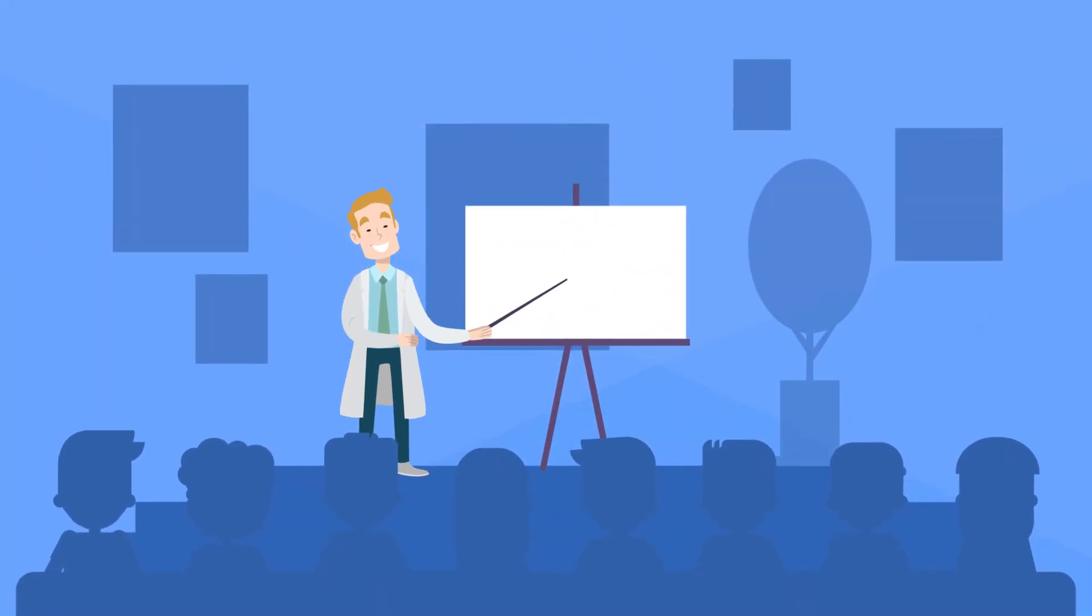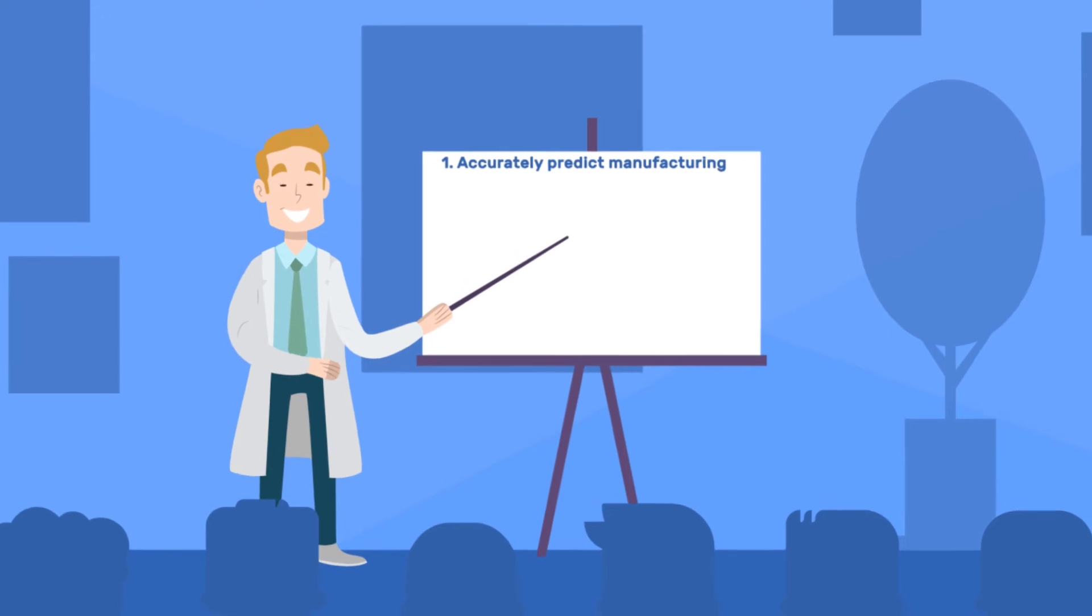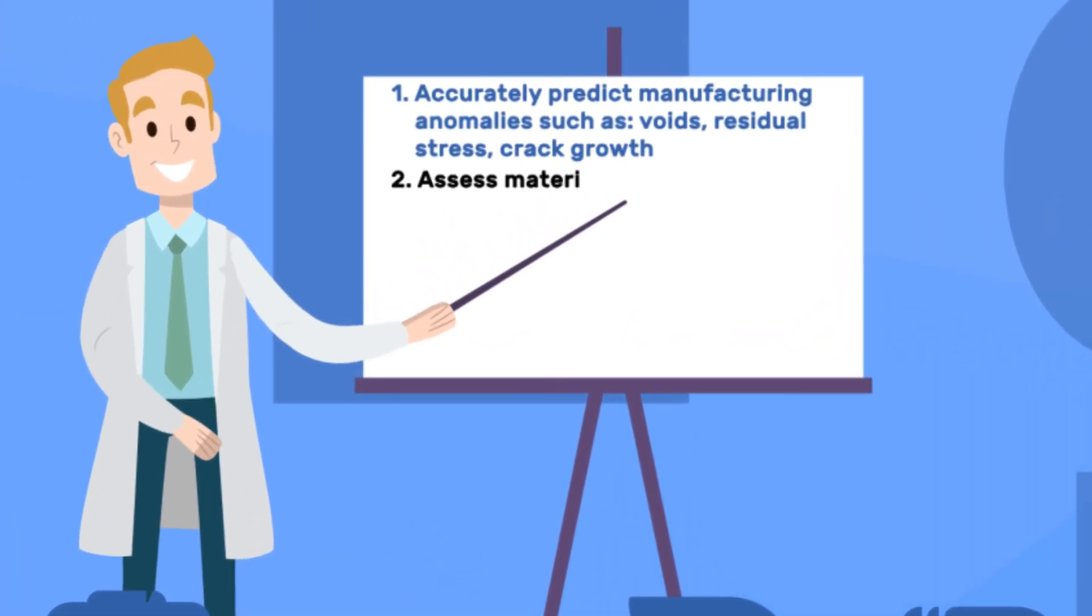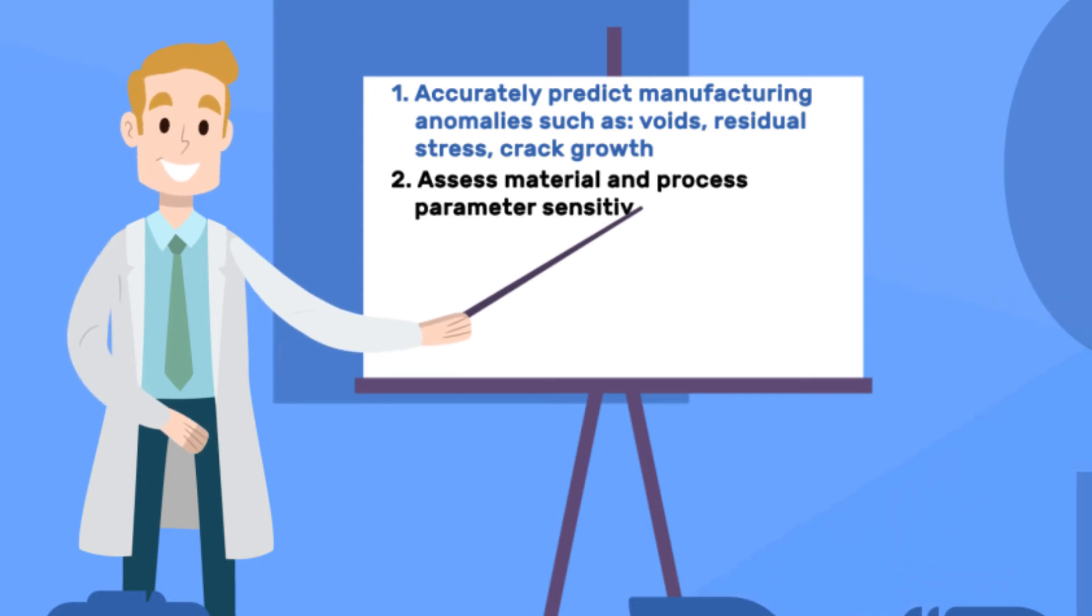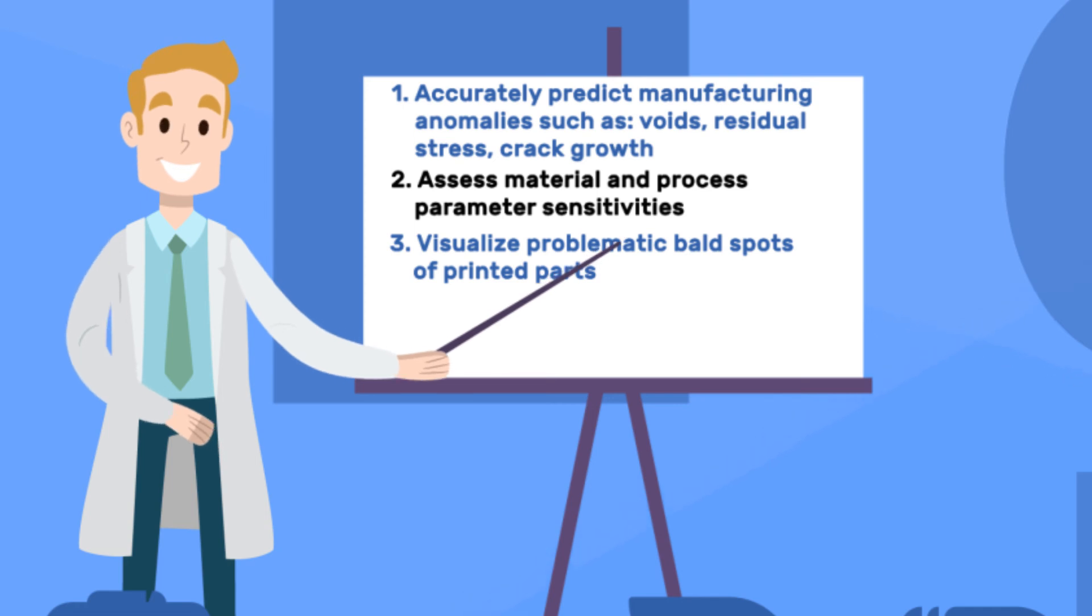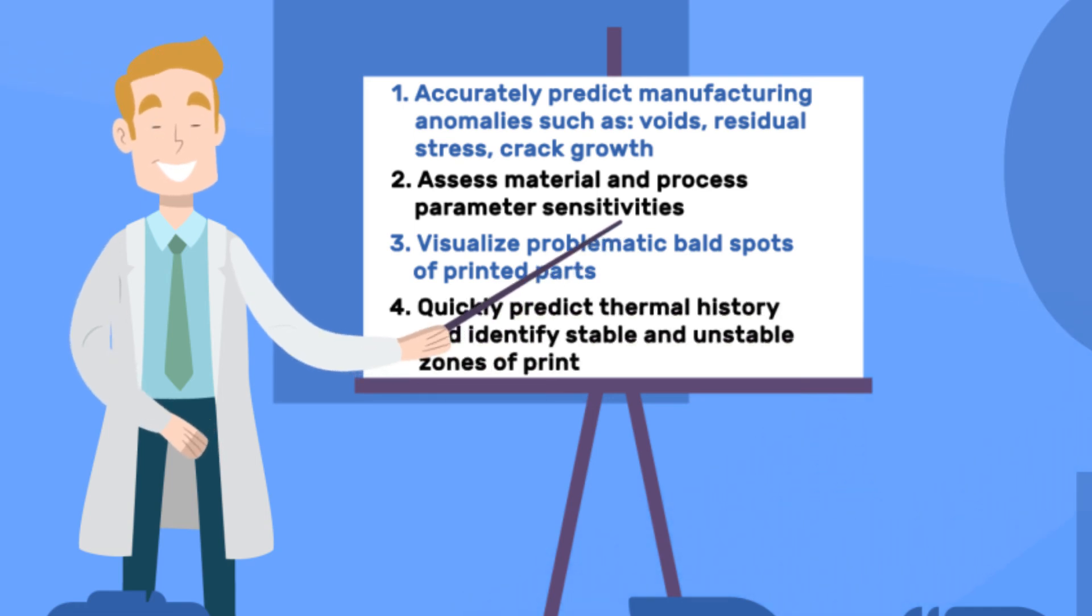By using Genoa 3DP, users can accurately predict manufacturing anomalies such as voids, residual stress, and crack growth, assess material and process parameter sensitivities, visualize problematic bald spots of printed parts, quickly predict thermal history, and identify stable and unstable zones of print.